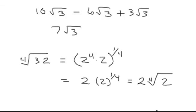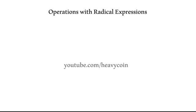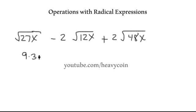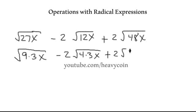Now let's work some with a variable involved. Let's say we had the square root of 27x minus 2 times the square root of 12x plus 2 times the square root of 48x. I'm going to simplify this down. I'm going to break 27 up — we know that 27 is 9 times 3, and we know that 12 is 4 times 3. For 48, let me do a little side work.